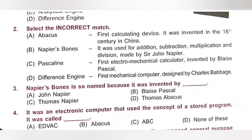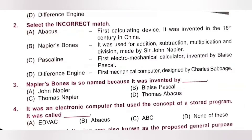Question 2: Select the incorrect match. A. Abacus — fast calculating device, invented in the 16th century in China. That is the correct match. B. Napier's Bone — used for addition, subtraction, multiplication and division, made by Sir John Napier. Also correct. C. Pascaline — first electromechanical calculator invented by Blaise Pascal. This is the incorrect match, because Pascaline is not an electromechanical calculator; it could do addition and subtraction by manipulating its dials. D. Difference engine — first mechanical computer designed by Charles Babbage. Also correct. So option C is the correct answer.